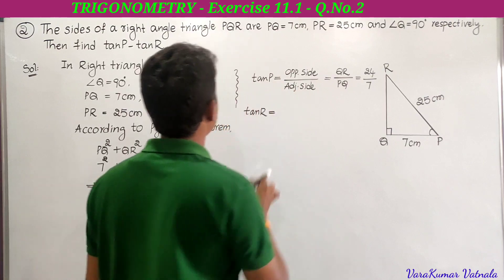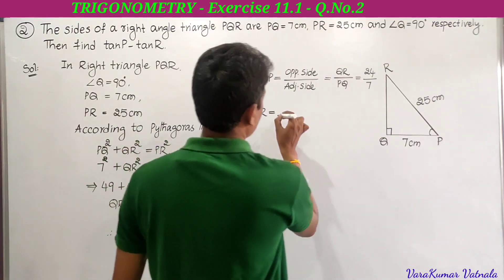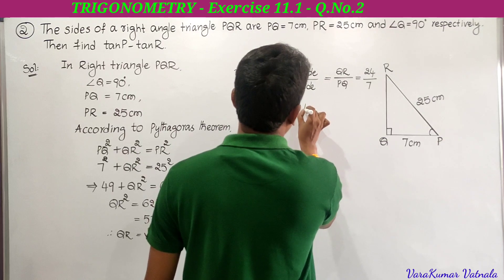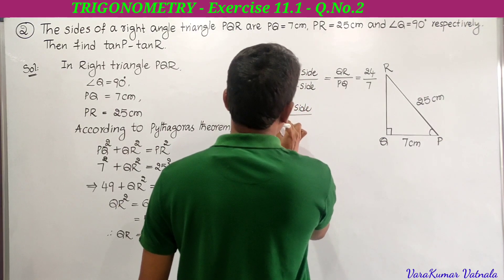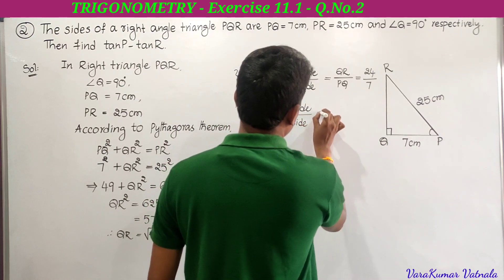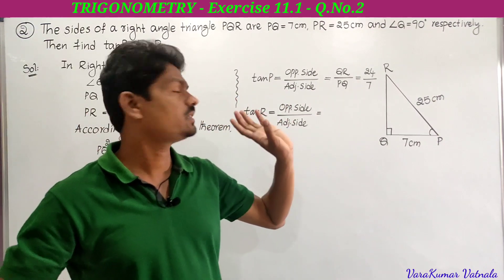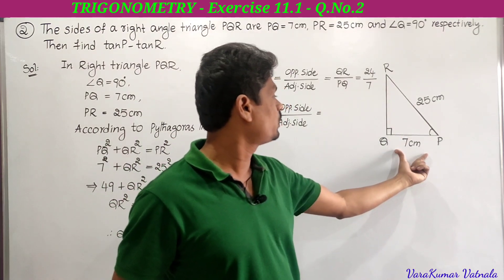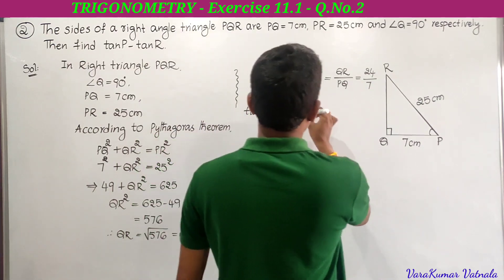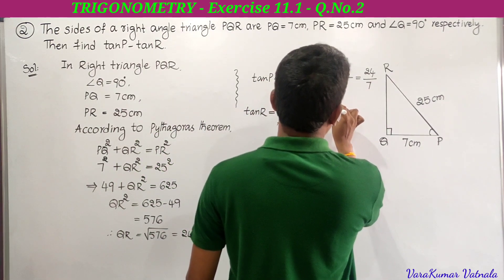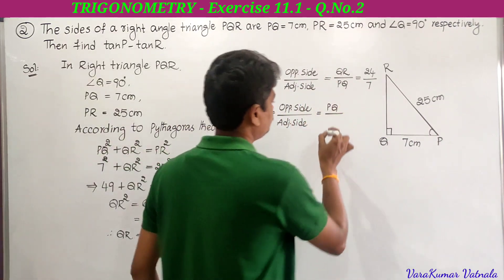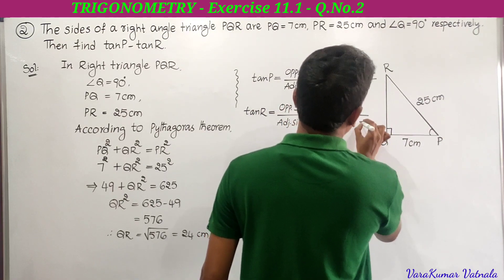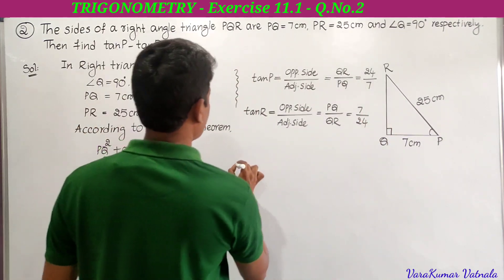Now find tan R. Tan R equals opposite side to angle R divided by adjacent side to angle R. Here, the angles are different, so opposite and adjacent sides change. For angle R, the opposite side is PQ and the adjacent side is QR. So tan R equals PQ divided by QR, which is 7 divided by 24. Tan R equals 7 by 24.